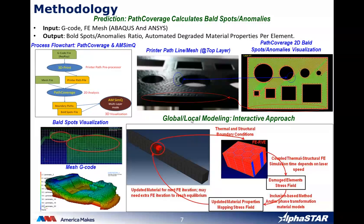The global-local modeling interactive approach takes the global model down to the local level, using thermal and structural boundary conditions to perform coupled thermal-structural FE simulation — where time depends on laser speed. This shows damage elements and stress fields, which are then mapped back into the global model to update material properties for the next FE iteration, repeated until equilibrium is reached.